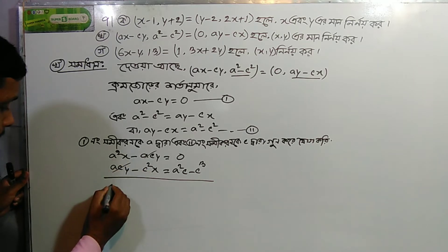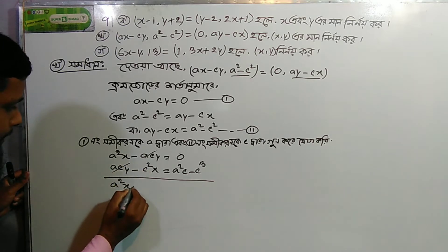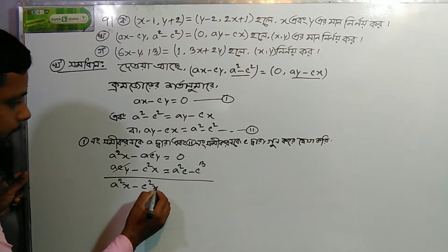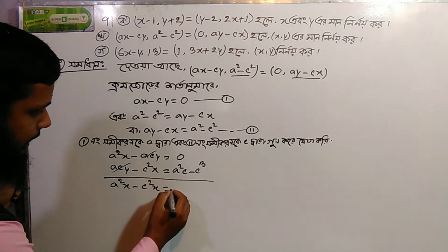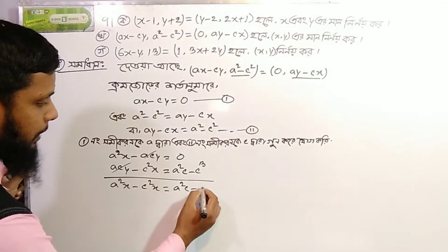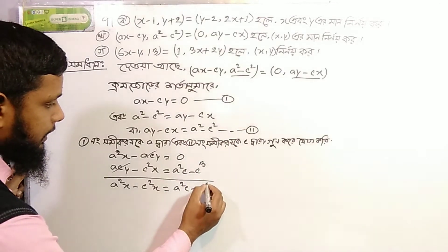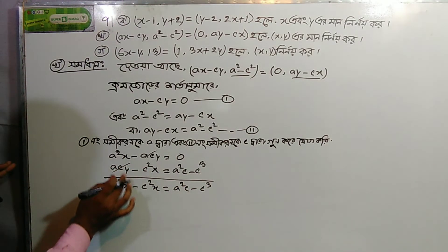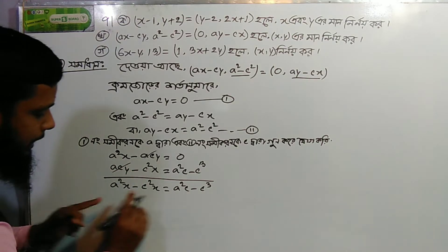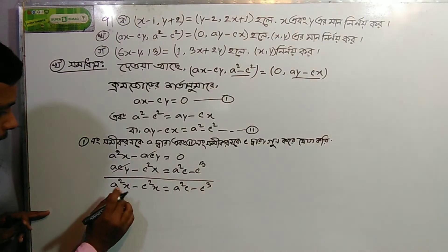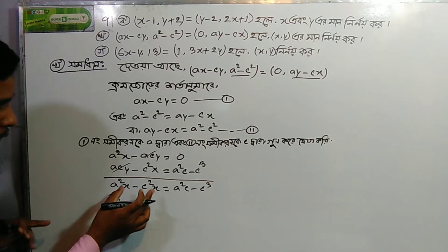We are going to have a squared x minus c squared x. So we are going to have a squared c minus c cubed. We are going to have a squared c minus c cubed, so c is common.